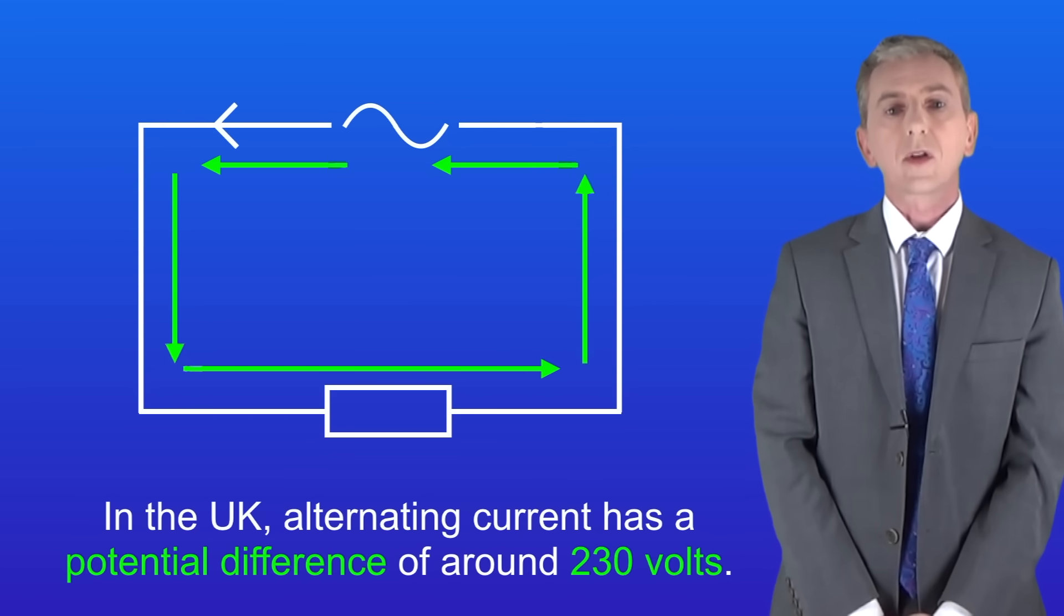Now scientists can actually see the pattern of an electrical current using a machine called an oscilloscope and I'm showing you an oscilloscope here. Straight away we can see that this shows an alternating current.